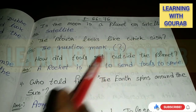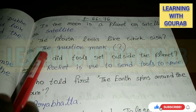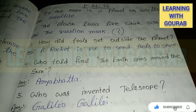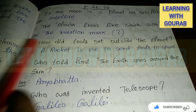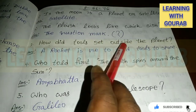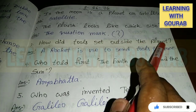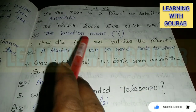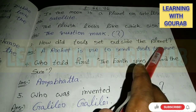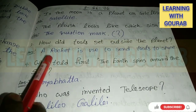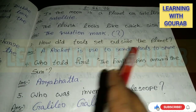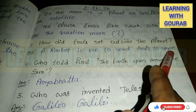How did tools get outside the planet? How can any tools go beyond the planet? Answer: A rocket is used to send tools to space.